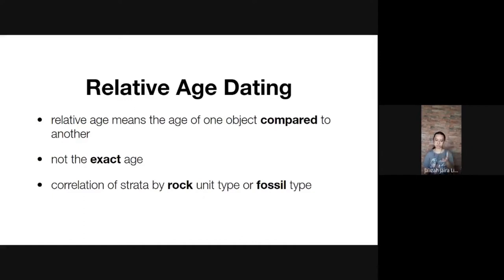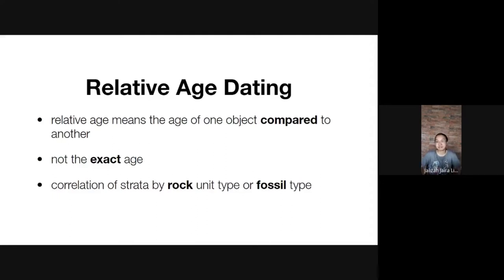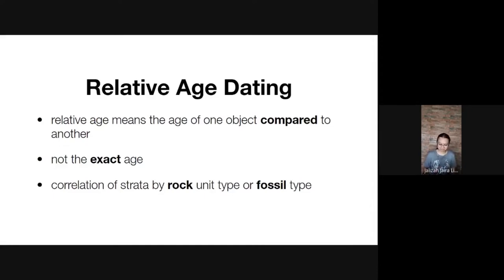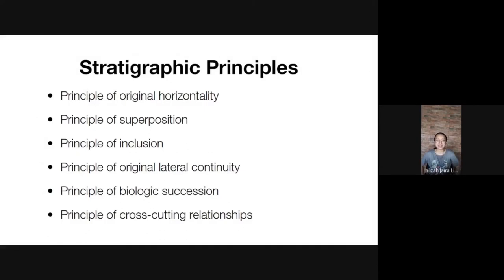Why is it so important to find the actual age of objects? Why are we not satisfied with relative age dating when we have other, more accurate methods available? Because in science we try to pursue the truth, and we want to have the most correct information so we can pass it on to the next generations.